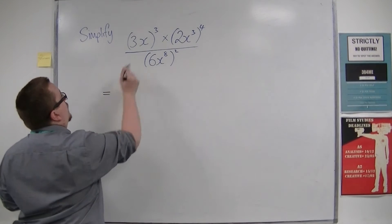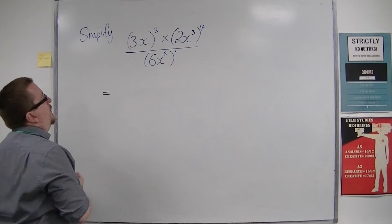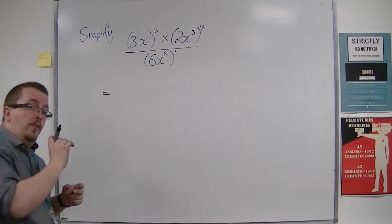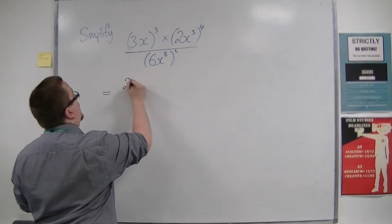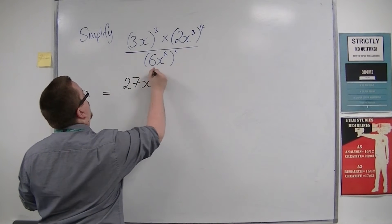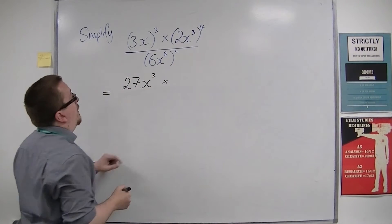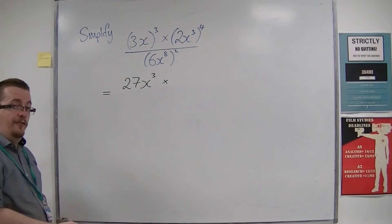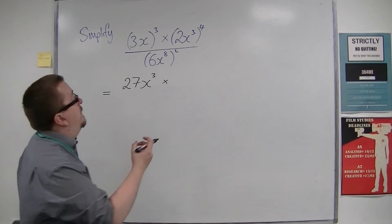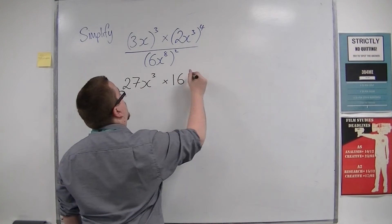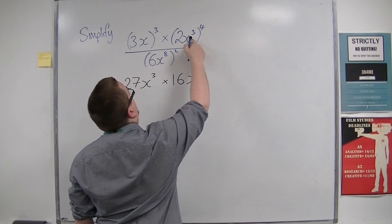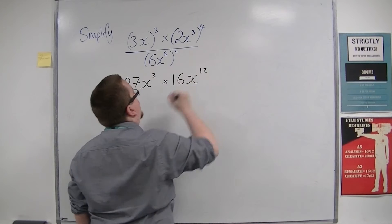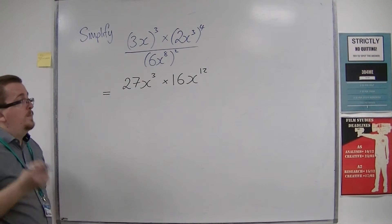So we have 3x cubed, so 3 gets cubed as well, so 3 cubed is 27, so 27x cubed. And we're going to multiply that by 2x cubed to the power of 4. So 2 to the power of 4 is 16, so that's 16x to the power of 12. x cubed to the power of 4 would be x to the 12.